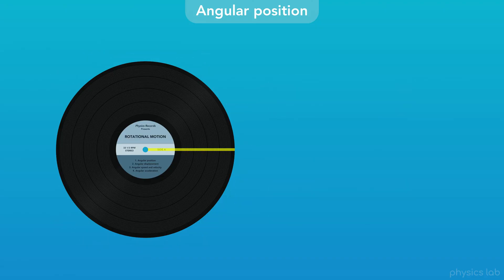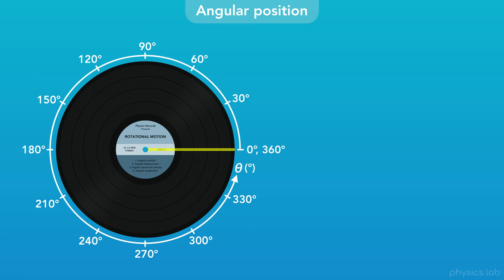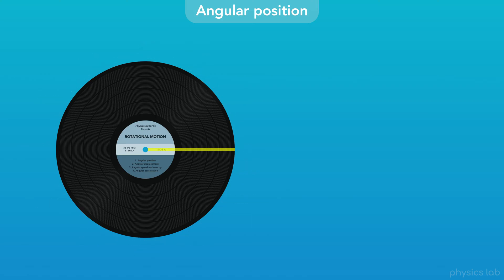Now, let's talk about units. So far we've been using degrees, but there's a few other units we need to know. First, the SI unit for angular position is radians, RAD for short.